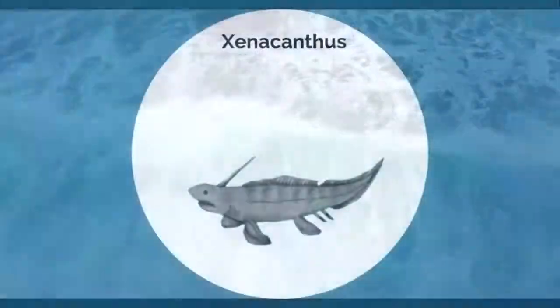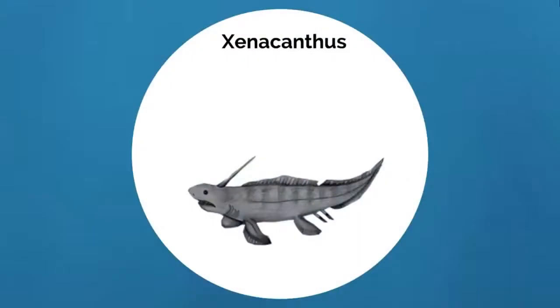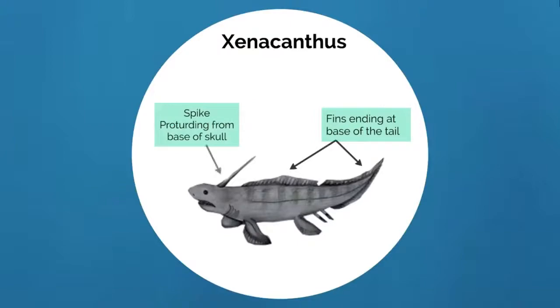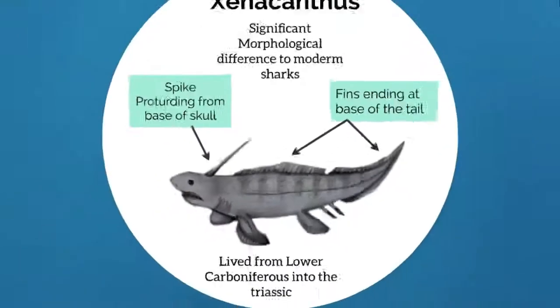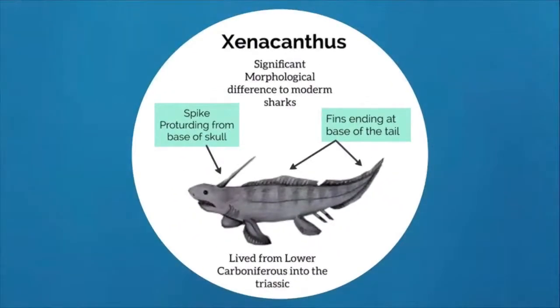A survivor of the P-T extinction event was the Order Xenacanthida, which lived from the Lower Carboniferous through to the Triassic. These are freshwater sharks with fins that reach down their backs, ending at the base of their tail — a significant morphological difference from the famous triangle fin of modern sharks. These Xenacanths possessed a spike which protruded from the base of the skull, believed to have been used as a defensive weapon against larger predators such as giant marine reptiles like ichthyosaurs.